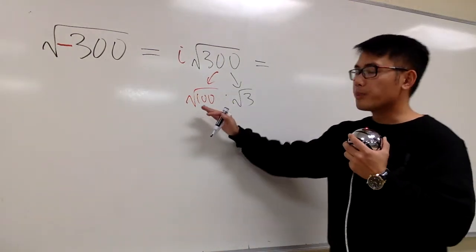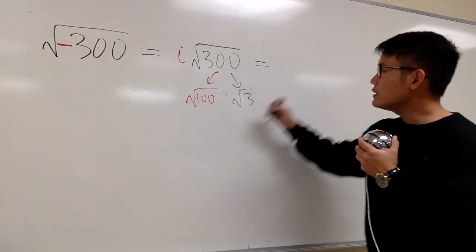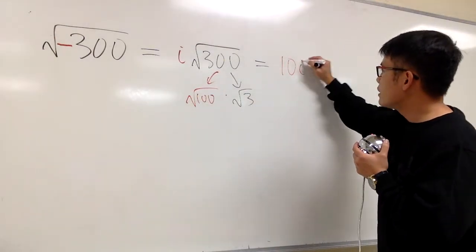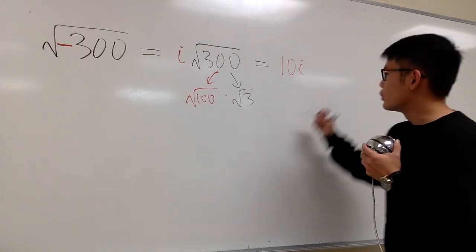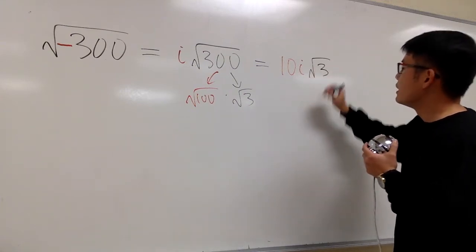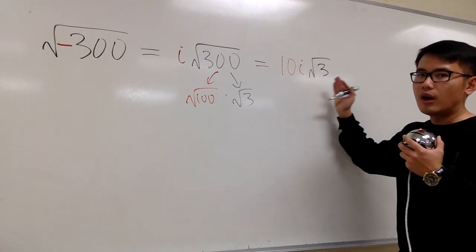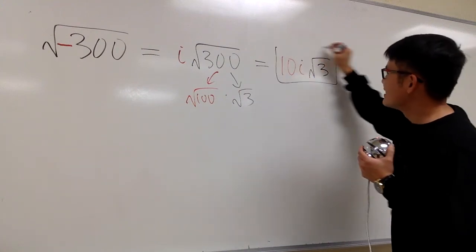And the way to write this down is we'll put down the number in the front first, so we'll put down the 10, and then I will maintain this i, and we'll write down the radical at the end. So we have the square root of 3. At the end, this is 10i square root of 3. This is the answer.